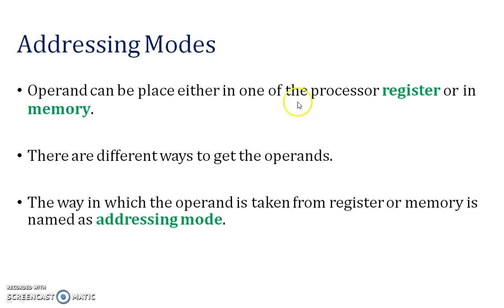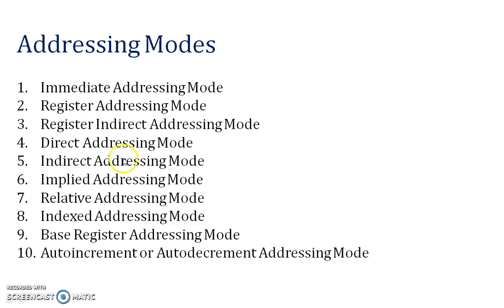An operand can be placed either in the processor register or in memory. There are different ways to get the operand, because the operand is required to perform a particular operation. The way in which the operand is taken from a register or memory is called the addressing mode. Whenever you fetch the operand from a particular address, this method is called an addressing mode.